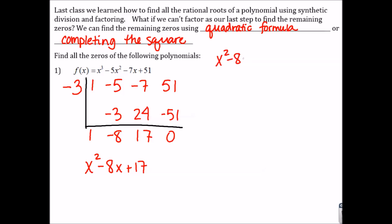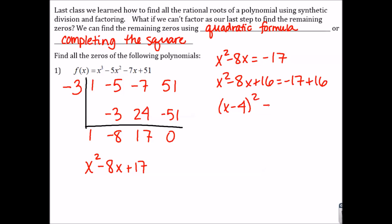Just as a reminder, if you're completing the square, the first step is to move the constant to the other side of the equation. If we had an a value other than 1, we would need to divide everything by a, but a is 1 so we don't have to worry about that. The next step is to take b, which is negative 8, divided by 2, which gives us negative 4, and square it, which is 16. Then we're going to add 16 to both sides. Then I can factor the left side of the equation and simplify the right side.